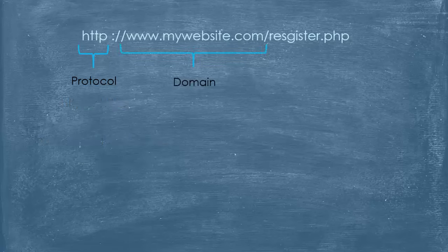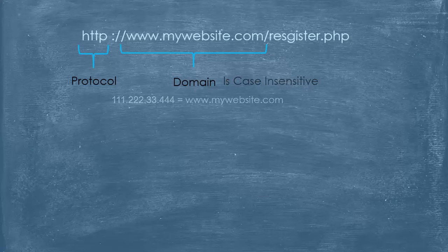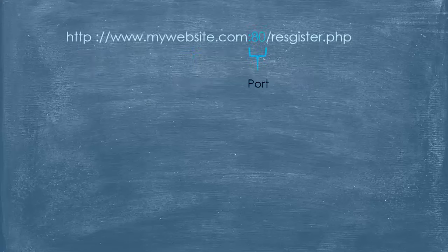The domain is the name that the domain name server gives a unique IP address, so we can use either the name or the IP address. For example, mywebsite.com has the IP address 111.222.33.444. The domain in the URL is case insensitive. An optional attribute is the port, and if present it should appear after the domain, preceded by a colon.